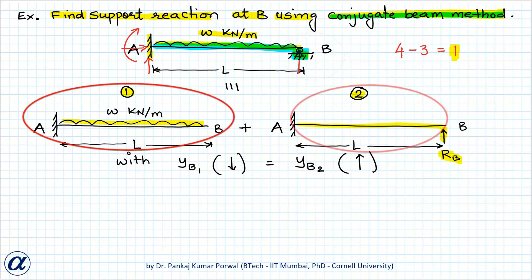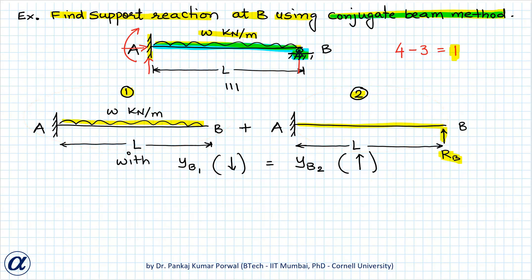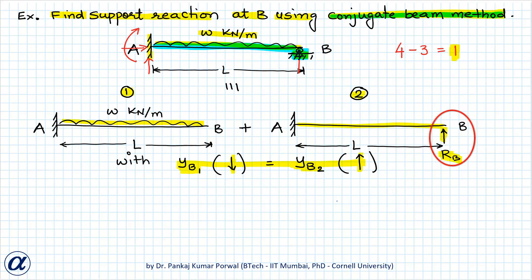The superimposition of structures 1 and 2 gives us the original structure if the vertical displacement of point B in structure 1 (YB1, downward) equals the vertical displacement of point B in structure 2 (YB2, upward). This is the compatibility equation ensuring boundary conditions are satisfied. The formula for YB2 — displacement of the free end of a cantilever under a concentrated load — is YB2 = RB·L³ / (3EI).